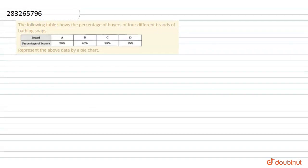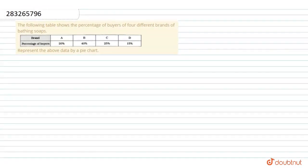Hello everyone, we have given a question that states that the following table shows the percentage of buyers of 4 different brands of bathing socks. We present the above data in a pie chart.